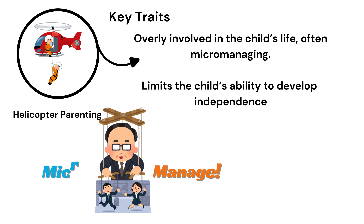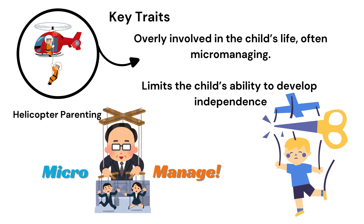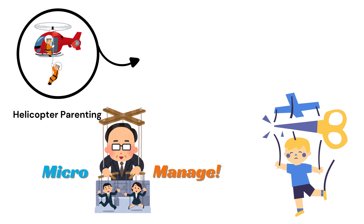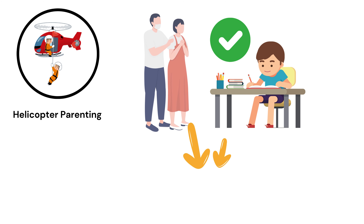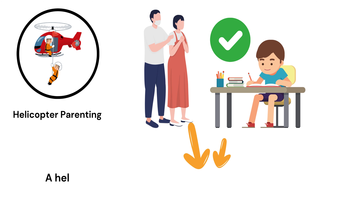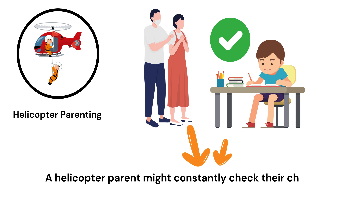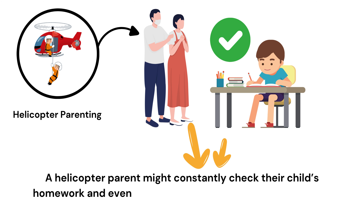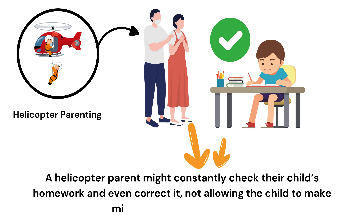Limits the child's ability to develop independence. Example: A helicopter parent might constantly check their child's homework and even correct it, not allowing the child to make mistakes or learn from them.